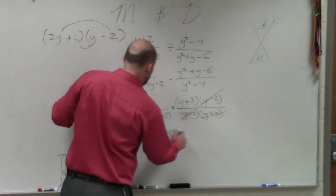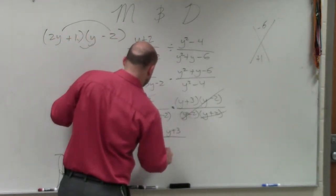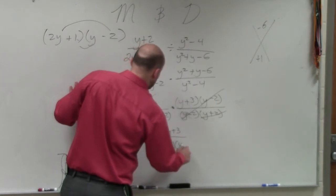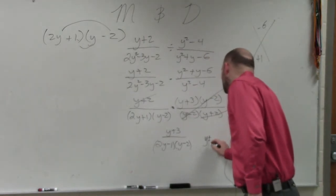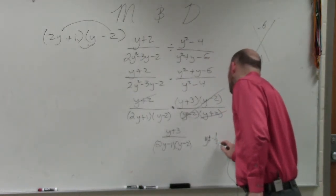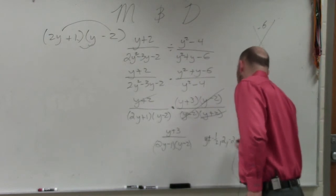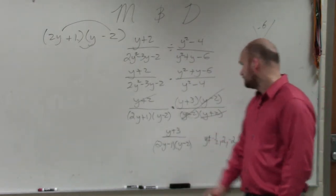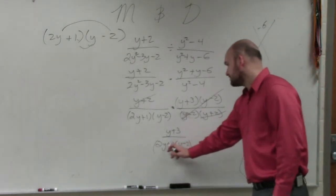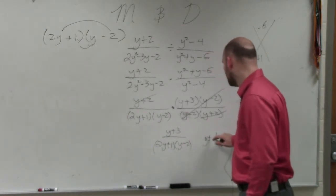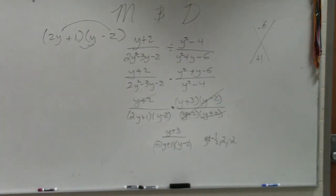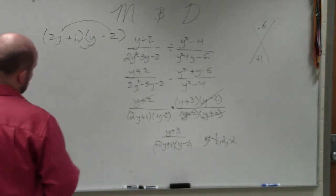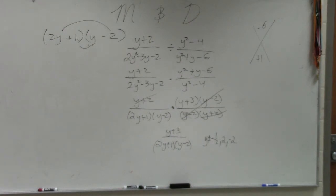So my final answer is y plus 3 divided by 2y plus 1 times y minus 2, where y cannot equal negative 1 half, positive 2, and negative 2. Which means 2y plus 1. 2y plus 1, yes. So that would be a positive. Oh, no, it's a negative. Huh? I don't know. Huh? All right.